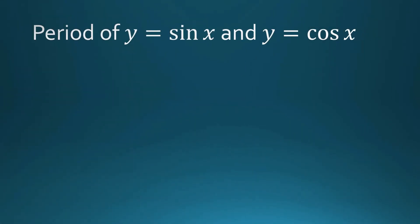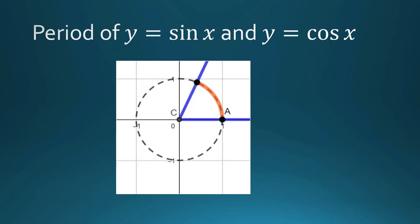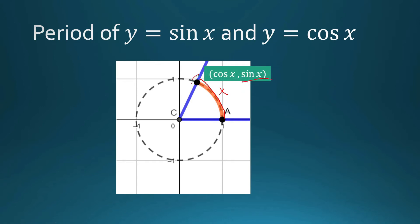Why are y = sin(x) and y = cos(x) periodic functions? Let us go back to how we evaluate the sine and cosine of an angle using the unit circle. Given an angle whose arc length or angle measure is x, the sine of that angle is the second coordinate of the corresponding point, and the first coordinate is cosine of x.